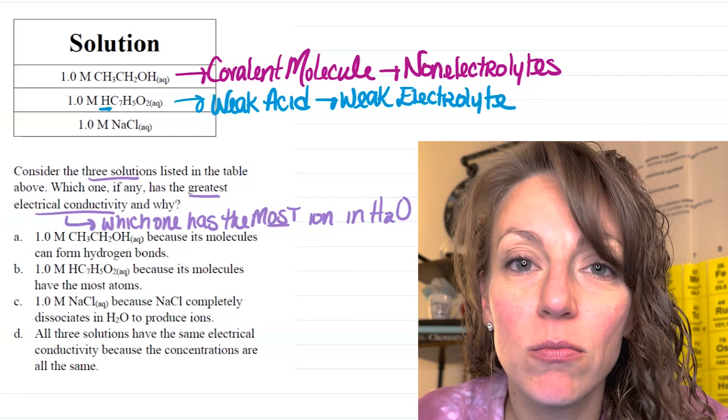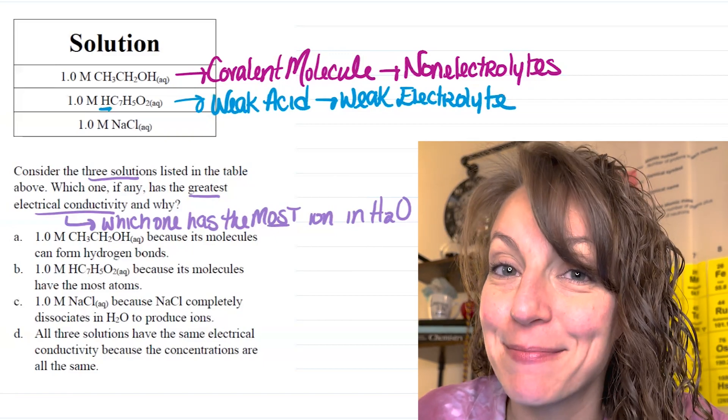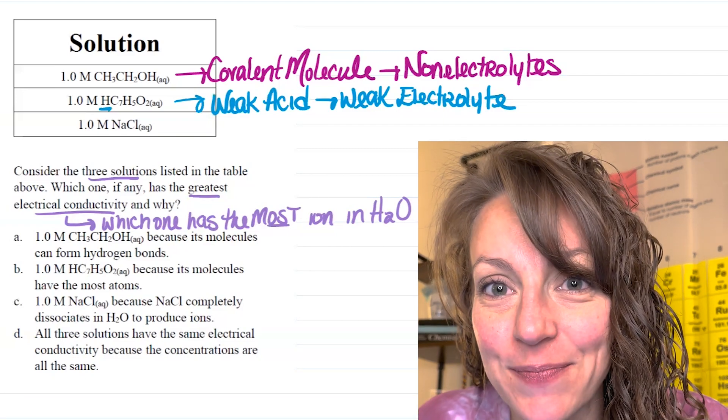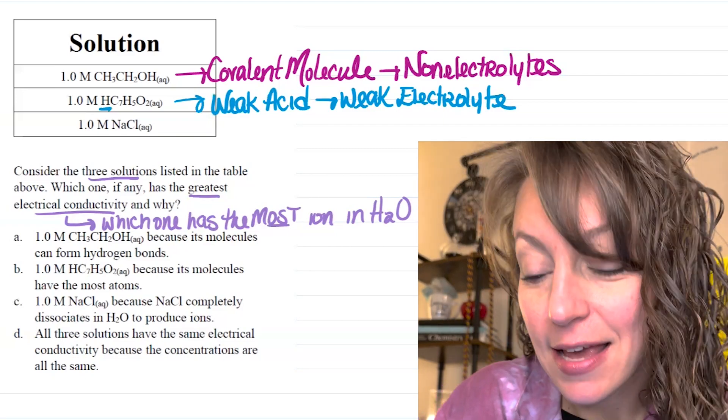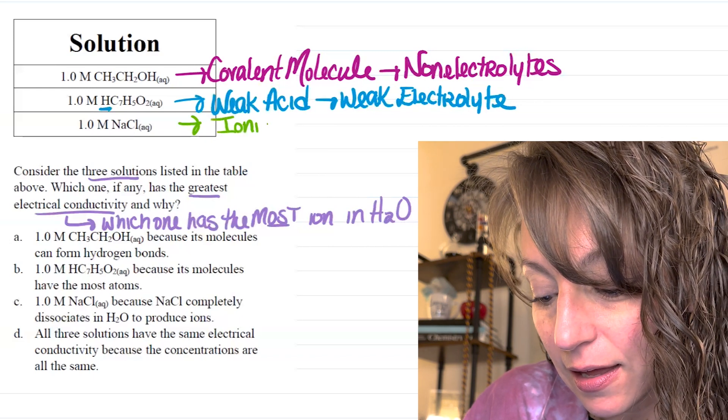They give us 1.0 molar NaCl. Now, sodium Na is a metal and Cl is a non-metal. This indicates that this particular species is an ionic compound.